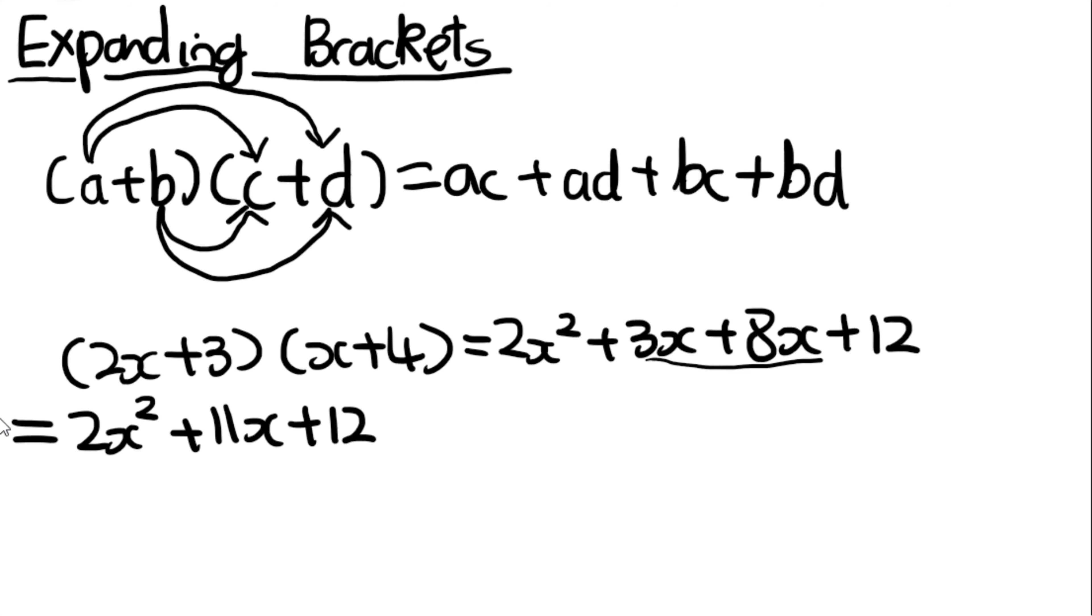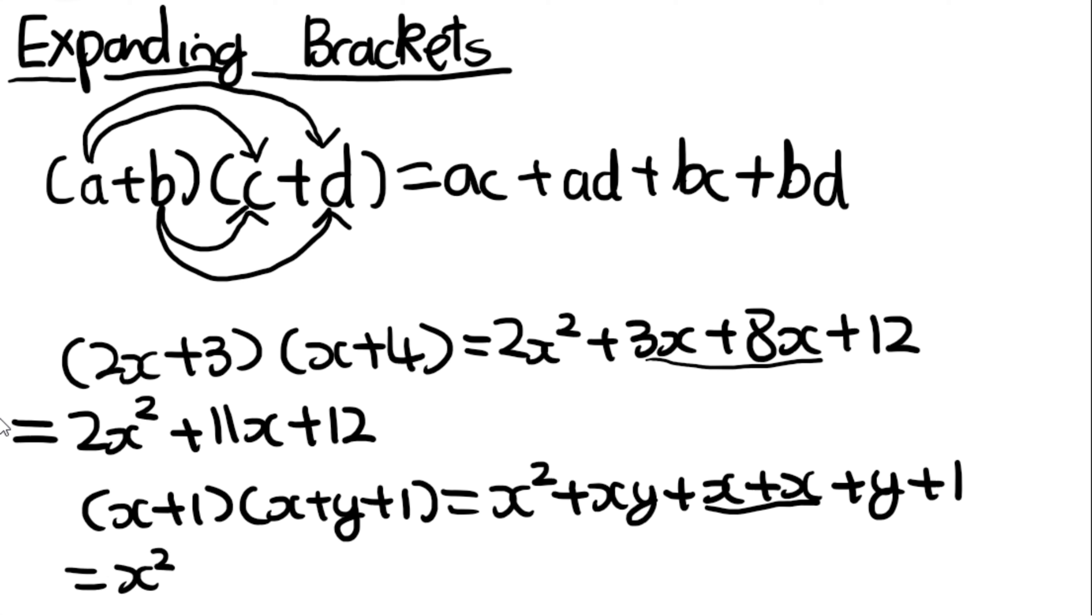Another example. x plus 1. There are three terms in this bracket, although that doesn't matter. So x times x is x squared, x times y is xy, x times 1 is x, 1 times x is x, 1 times y is y, and 1 times 1 is 1. Again, we can simplify this because of the like terms, and we can do x squared plus xy plus 2x plus y plus 1.